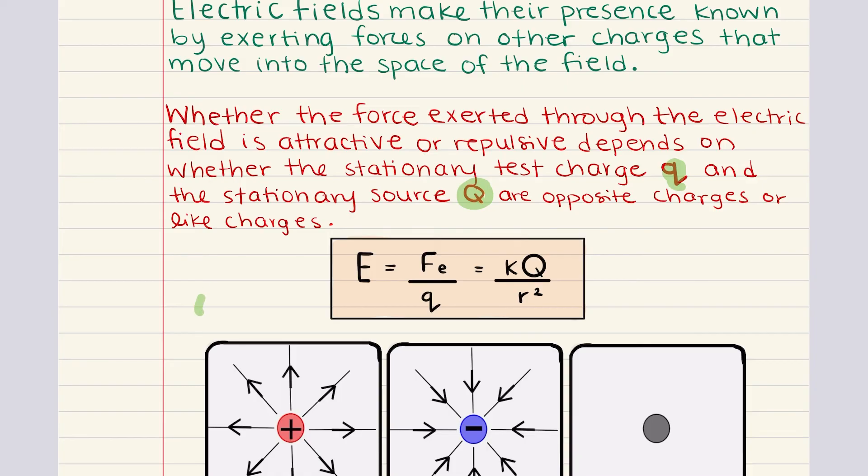Now the magnitude of this force can be calculated using this equation, where E is the electric field strength. This is equal to Fe, which is the electrostatic force, divided by the test charge. And that's equal to K, which is Coulomb's constant, multiplied by capital Q, which is the source charge, divided by R squared. This R is the distance between the source charge and the point where the field is being measured.